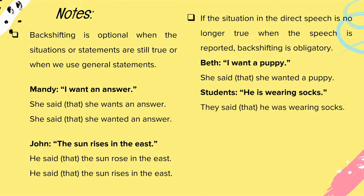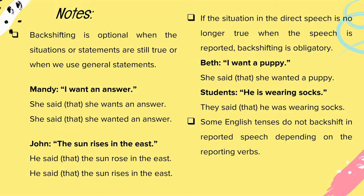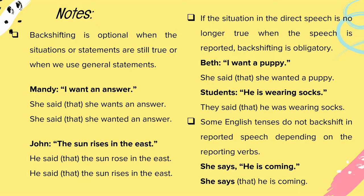Students — 'He is wearing socks' — they said that he was wearing socks. Some English tenses do not backshift in reported speech depending on the reporting verb. For example, when using a present reporting verb: she says that he is coming.